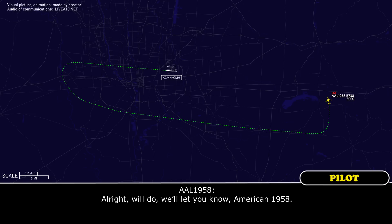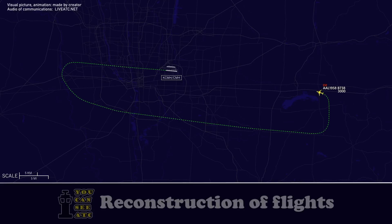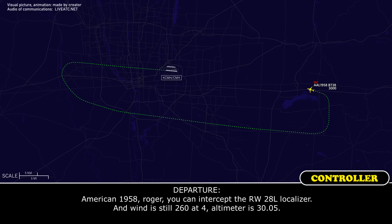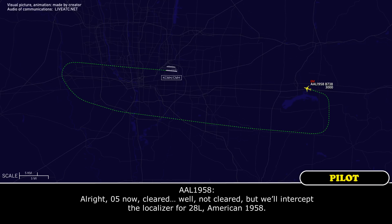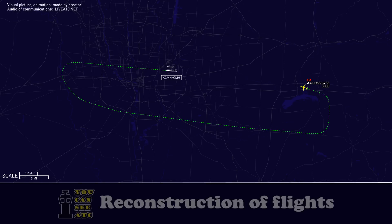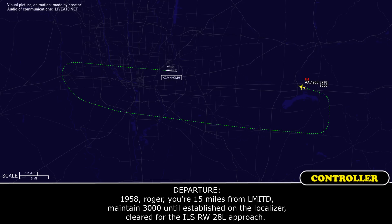American 1958, roger — you can intercept the runway 28L localizer. Wind still 260 at 4, altimeter 30.05. 30.05, American 1958. American 1958, you're 15 miles from the field. Maintain 3,000 until established on the localizer — cleared for the ILS runway 28L approach.